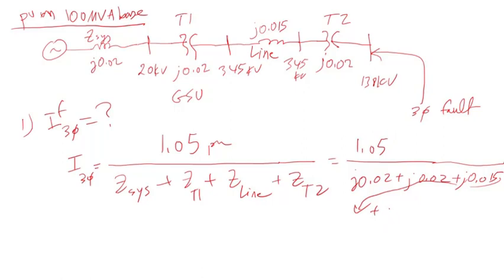So just T2, which is j0.02 per unit. If you carry out the calculation, you get 14 per unit. That's the three-phase fault current.